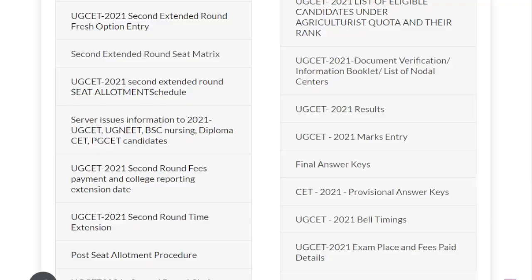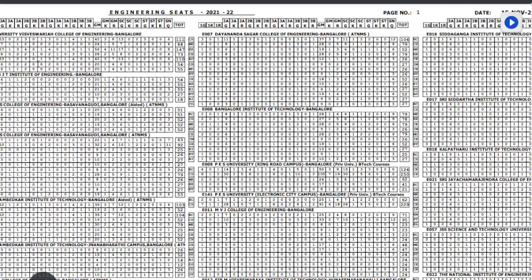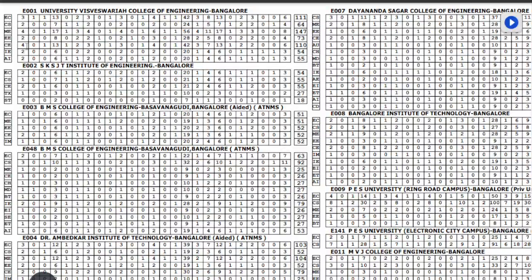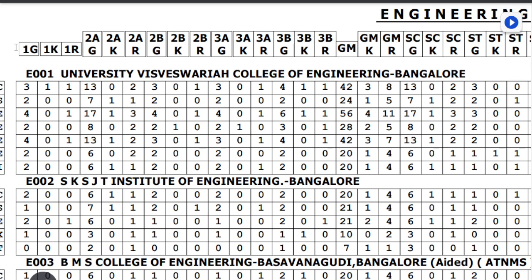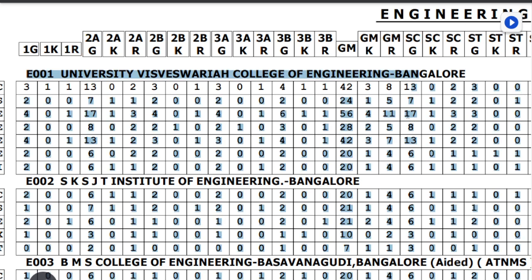First of all, look at the seat matrix. In the seat matrix, you can see the category names: 1G, 1K, 1R, 2G, 2A, 2K, 2R, 1GL, 3, 2, 4, and others. Most seats — except for 2A, SC, and a few others — the maximum number of seats for a particular college will be in the general merit section.